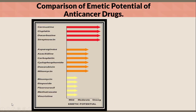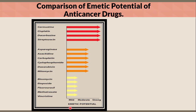Comparison of emetic potential of anticancer drugs. Three main categories: mild, moderate, or strong emetic potential. Strong emetic potential: carmustine, cisplatin, dacarbazine, and streptozocin. Moderate emetic potential: asparaginase, azacitidine, carboplatin, cyclophosphamide, doxorubicin, mitomycin. Mild emetic potential: bleomycin, etoposide, fluorouracil, methotrexate, vincristine.